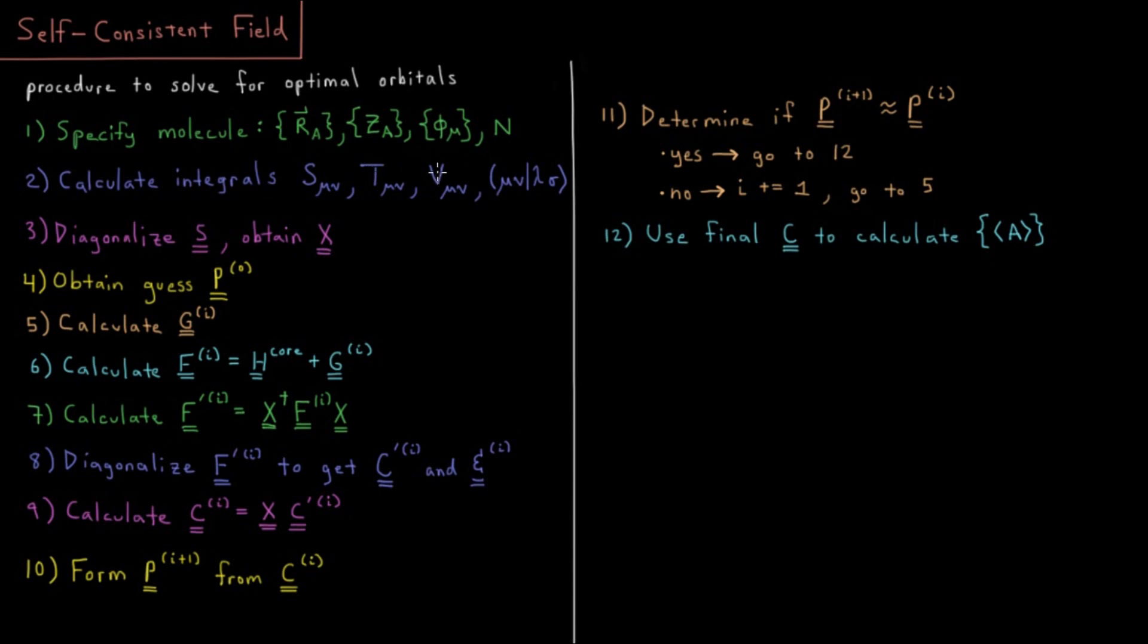The T matrix and the V matrix, once we calculate them, are not going to change on each iteration here, but the G matrix will. Note we have subscripts here, P_0 being the initial density matrix, G_i being the i-th G matrix, F_i being the i-th Fock matrix, but there's only one core matrix and that does not change.